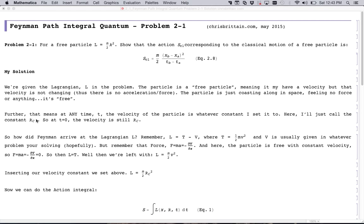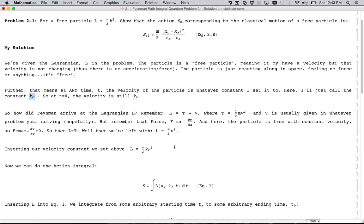So if velocity is constant, I set x dot subscript c as my constant velocity. I'll just call it that to keep track of it.